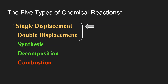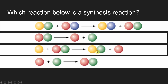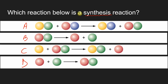Before we get to single displacement, let's do a little review of what we've learned up till now. I've got these general diagrams labeled A, B, C, and D. Which of these best represents synthesis? Synthesis means two things coming together. D looks like synthesis — definitely two things coming together — so that's a good representation of it.